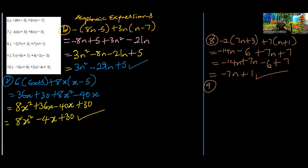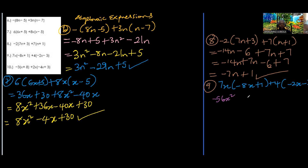Number 9: 7x into negative 8x plus 1, plus 4 into negative 2x minus 3. Opening the brackets: 7 times 8 is 56 but there is a negative, so negative 56x squared. 7 times 1 is 7x. Then positive 4 times negative 2x is negative 8x, and positive 4 times negative 3 is negative 12. Collecting x terms: 7x minus 8x is negative 1x, so the answer is negative 56x squared minus x minus 12.